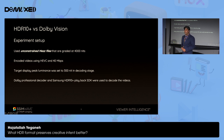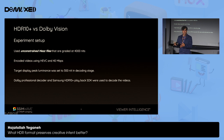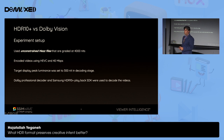I did some experiments. I took some unconstrained mezzanine files graded in 4,000 nits. I encoded them in HDR10+ and Dolby Vision Profile 5, and used a very high bitrate to reduce the chance of seeing compression artifacts. Then I decoded those frames, setting the target display peak luminance to 300 nits. I used the Dolby and Samsung SDKs to decode Dolby Vision and HDR10+ respectively.